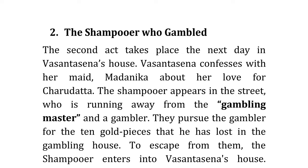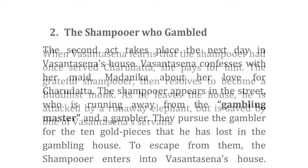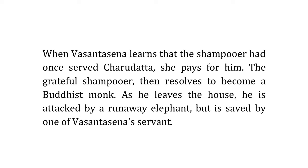Act 2: The Shampooer Who Gambled. The second act takes place the next day in Vasantsena's house. Vasantsena confesses to her maid Madanika about her love for Charudatta. After a while, a shampooer appears in the street, running away from a gambling master and a gambler who pursue him for 10 gold pieces he lost. To escape, the shampooer enters Vasantsena's house. When Vasantsena learns he had once served Charudatta, she pays his debt. The grateful shampooer resolves to become a Buddhist monk, but on leaving he is attacked by a runaway elephant and is saved by one of Vasantsena's servants.